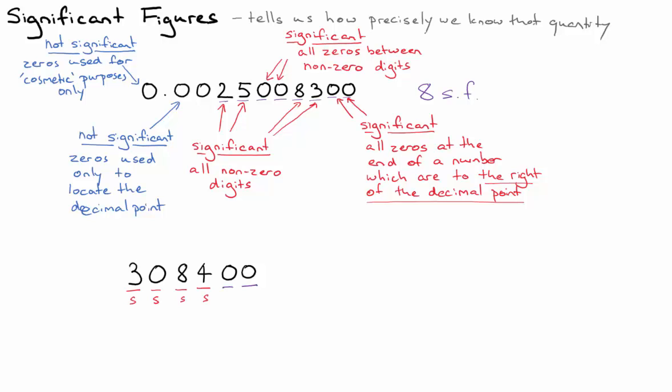or we might know to the nearest hundred that there were 308,400 people, approximately that many. So it's not clear the way this is written if they are significant. You would need to specify, when you were writing this number down, how many it had. So as it stands at the moment, it has between 4 and 6.